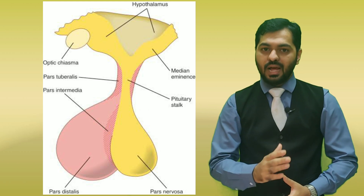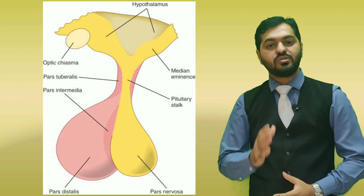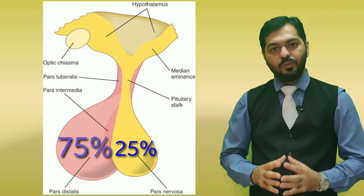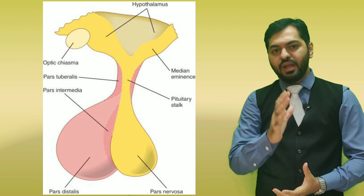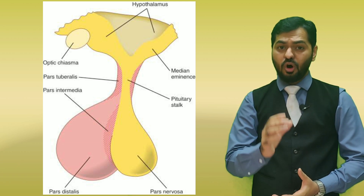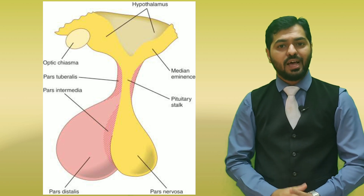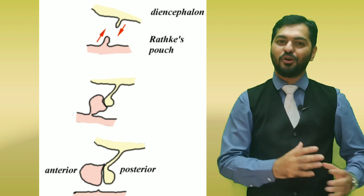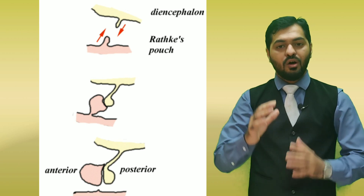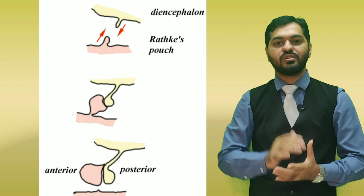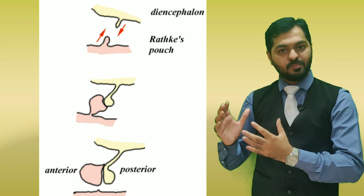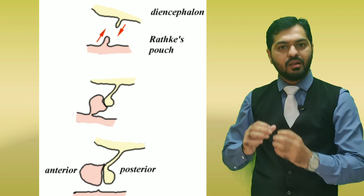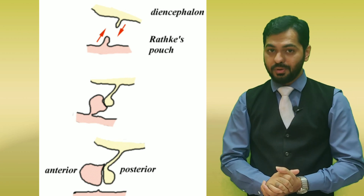When we observe the structure, the anterior pituitary contributes almost 75%, whereas the posterior pituitary constitutes only 25%. The anterior pituitary or adenohypophysis is produced from a pouch known as Rathke's pouch. This pouch is present during the embryonic stages — from the roof of the buccal cavity, a projection is produced, called Rathke's pouch, named after the scientist who discovered it. This pouch then separates out from the buccal cavity and develops into the anterior pituitary.